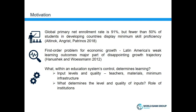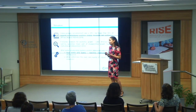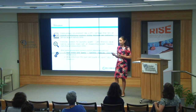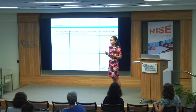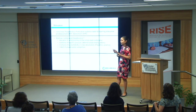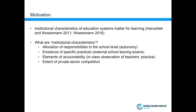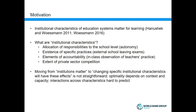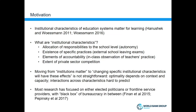We know that the level and quality of inputs matter, and that behind those inputs there are institutions. There is a literature making the case for the importance of institutional characteristics — things like autonomy, accountability, market structure, and private sector competition. But moving from 'institutions matter' to predicting the effect of specific institutional changes is quite complicated. Most quantitative research focuses either on elected politicians using elections for identification, or on frontline service delivery — schools, teachers, and principals.